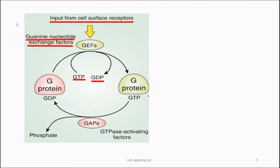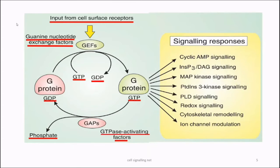The G protein previously bound with GDP, in association with GEFs, now has its GDP replaced by GTP. This GTP-bound G protein is in its active form and facilitates specific downstream functions. After some time, GTPase activating proteins, or GAPs, increase their activity on the GTP of the G protein, cleaving the terminal gamma phosphate and restoring the GDP-bound inactive state, thereby inactivating the entire response. This GTP-bound G protein is used in various cell signaling pathways.